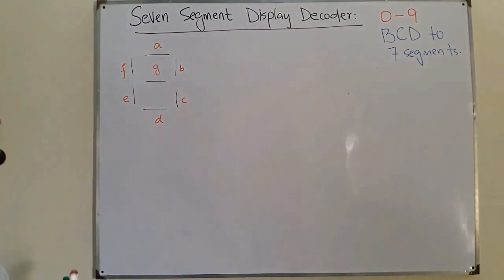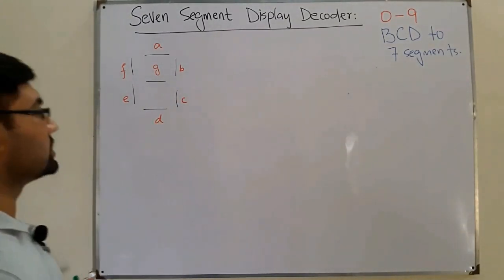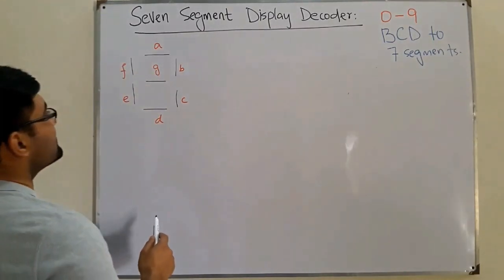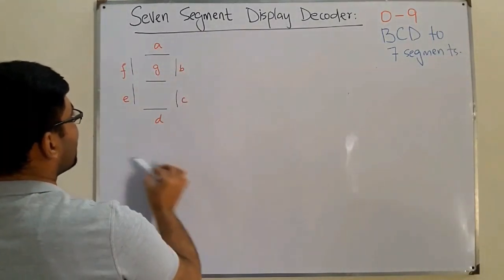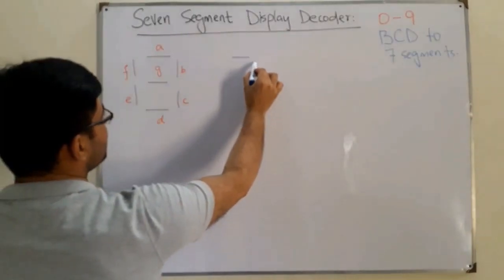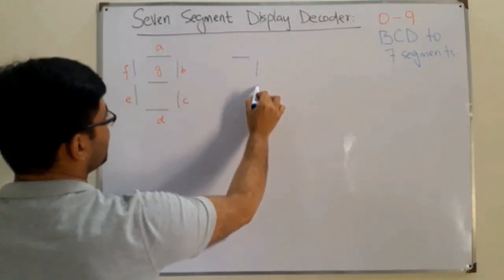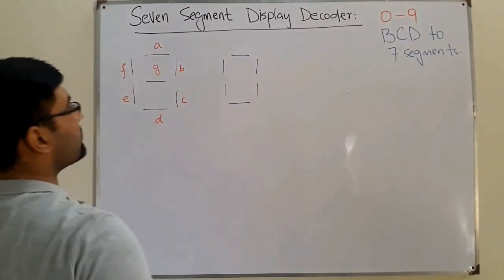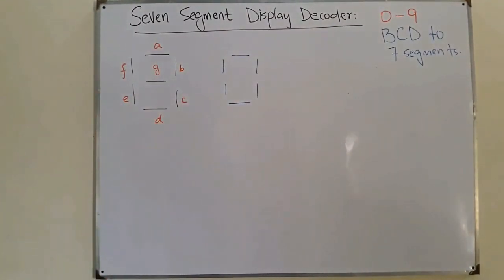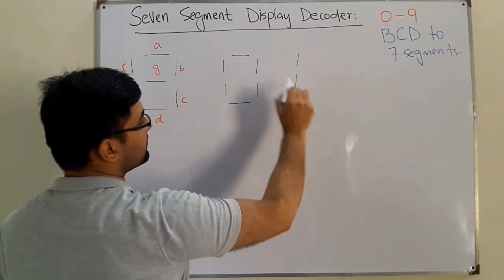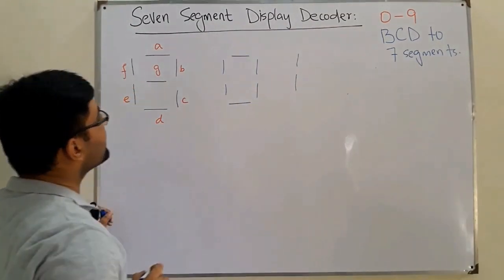If you have to display zero, all segments except g need to be on. That gives us zero on the seven segment display. For one, only b and c are on.